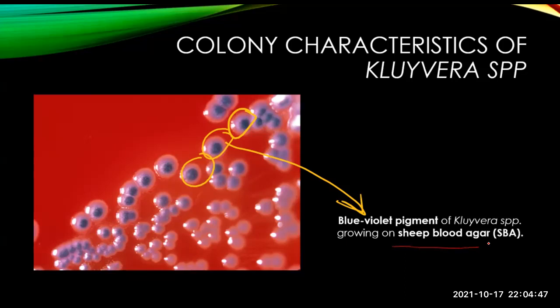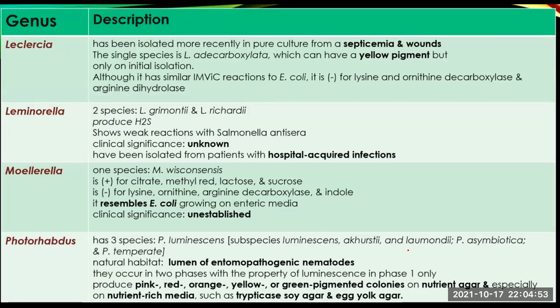Leclercia has been isolated in pure culture from septicemia and from wounds. The single species is L. adecarboxylata, which produces a yellow pigment but only during primary isolation. It has similar IMViC reactions to E. coli and is negative for lysine ornithine decarboxylase and arginine dihydrolase.